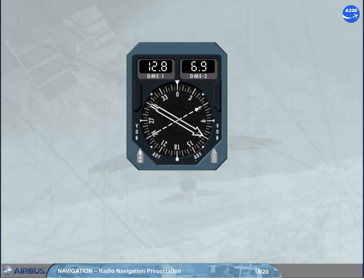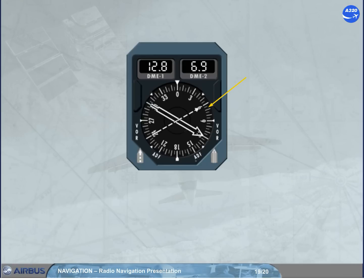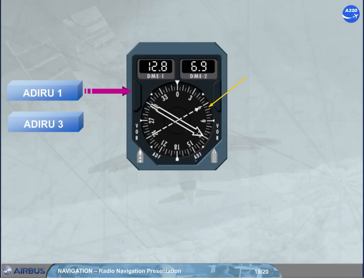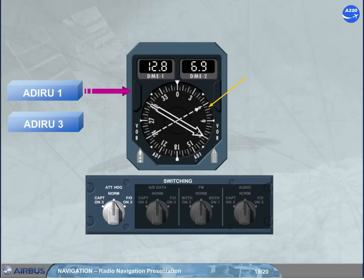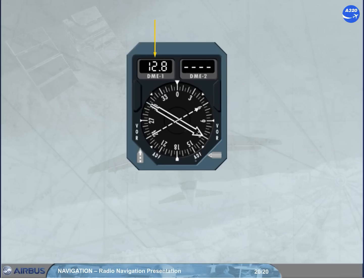Each pointer has an associated selector: the left selector selects either VOR1 or ADF1, and the right selector selects VOR2 or ADF2. Here, VOR1 and VOR2 are selected. The compass card displays the bearing as supplied by ADF1 in normal condition, or by ADF3 if selected by the ATT heading switching selector. The counters indicate the DME distance; however, the window will display only dashes if an ADF is selected.